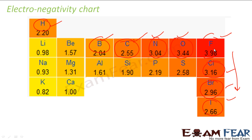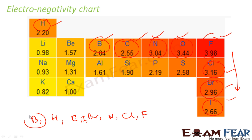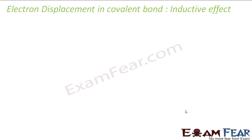Fluorine has the maximum electronegativity in this chart; hydrogen is the least. Then we have boron, then carbon. Bromine is the least electronegative among the halogens. Chlorine is at the maximum. Carbon, bromine, and hydrogen have less electronegativity; iodine is almost the same. Remember this electronegativity chart.